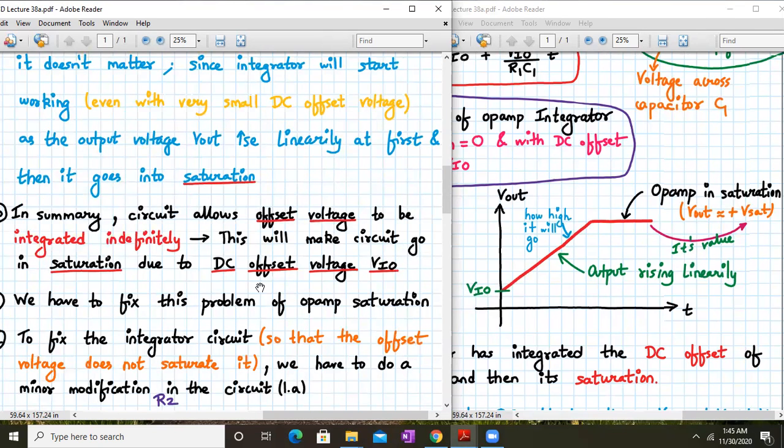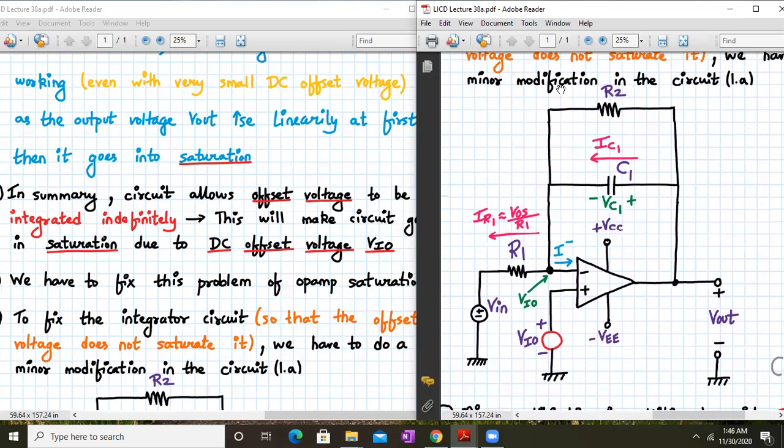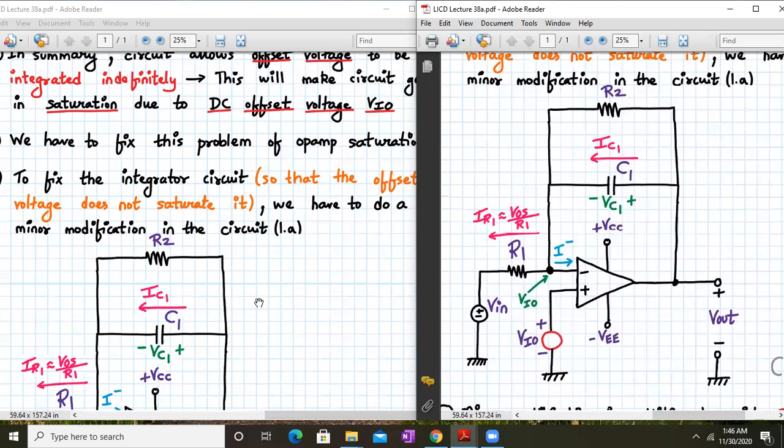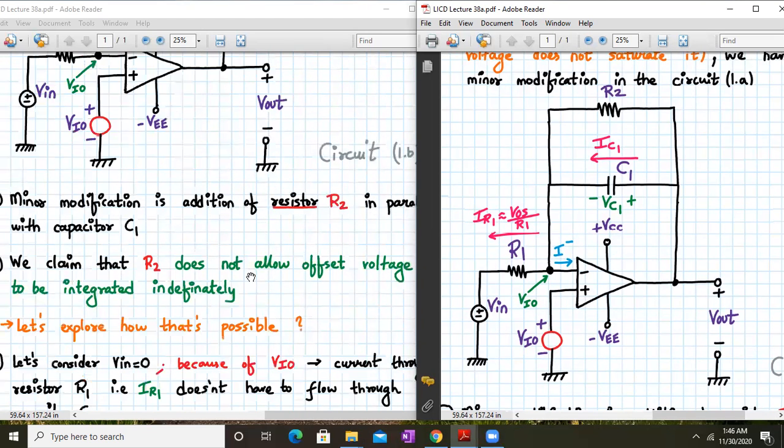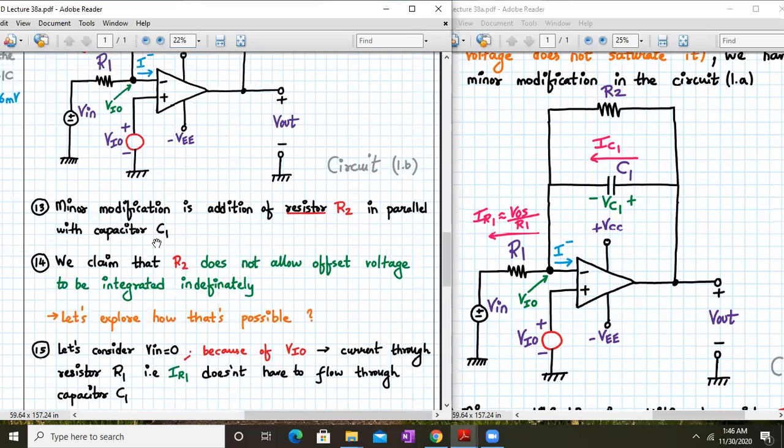In summary, the circuit allows the offset voltage to be integrated indefinitely with time, and this will make the circuit go into saturation due to DC offset voltage VIO. So somehow we need to fix this problem of op-amp saturation. We add a resistor R2 in parallel with capacitor C1. This is the minor modification in the circuit of op-amp integrator, addition of R2 resistor in parallel with C1. We claim that R2 does not allow offset voltage to be integrated. The op-amp will be saved from going into saturation.